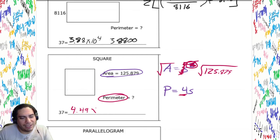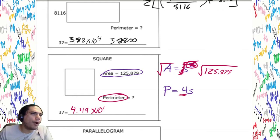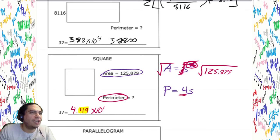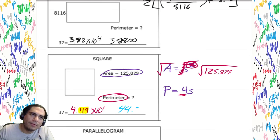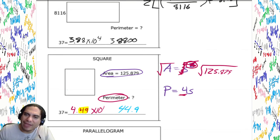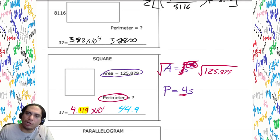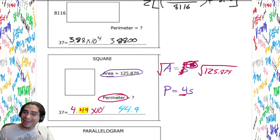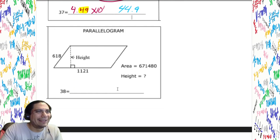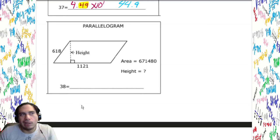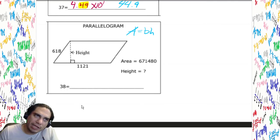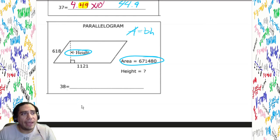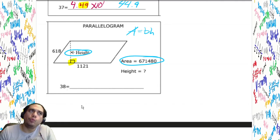We're not done — don't write 1.12 as the answer yet. We're looking for perimeter, not the side. So multiply by 4: hit 4 and multiply. We get 4.49 times 10 to the first. Perimeter formula for a square is 4 times side, and that's exactly what we did.